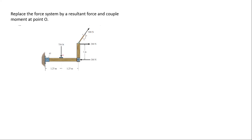To find the resultant force, we find the sum of forces in the x direction: 500 newtons times 3/5, plus 200 newtons minus 200 newtons. The 200 newton forces form a couple acting in opposite directions with the same magnitude, so they cancel each other out.